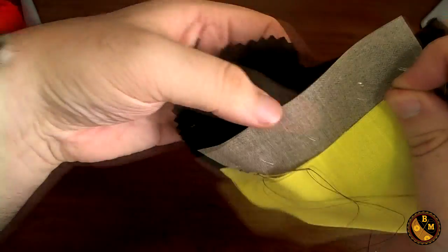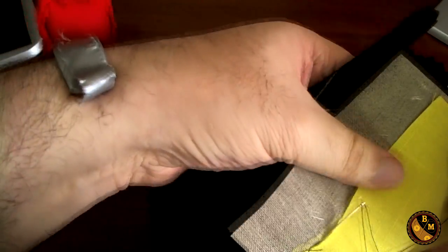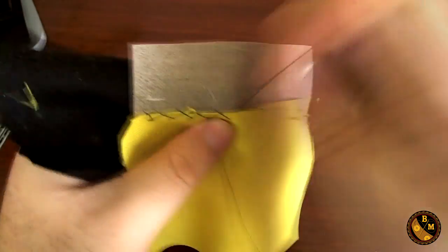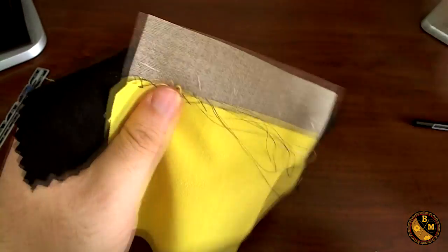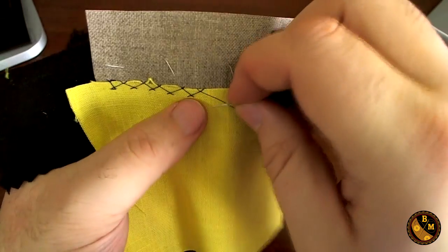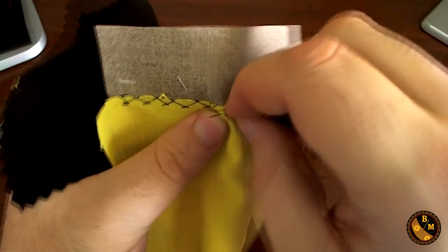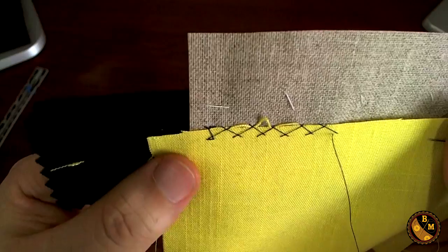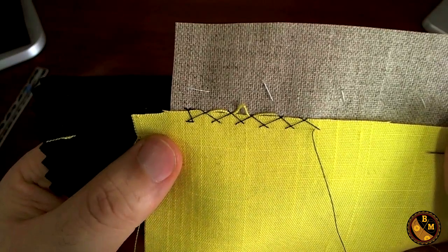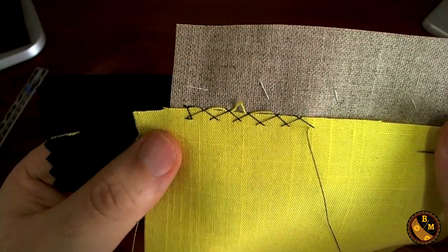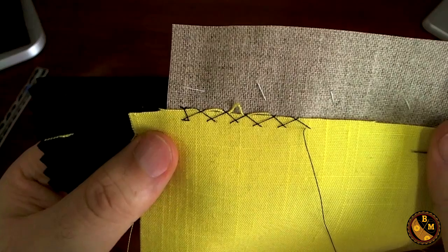I'm actually going to put the pin over here because it's flopping around. And there, there's a series of cross stitches. Now I'm going to transition to a double cross stitch.